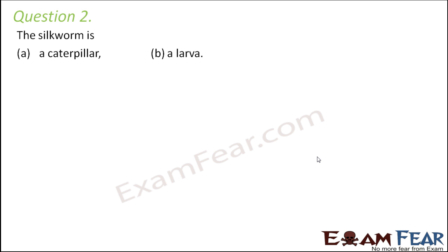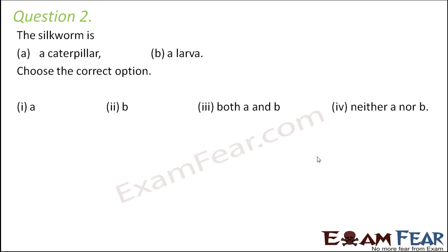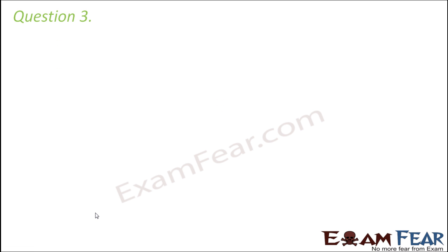Question number two: the silkworm is — a caterpillar, a larva — choose the correct option. The silkworm is just a stage in the life cycle of a silk moth. It is a caterpillar because it looks like one, and it is also a larva because it is the larval stage. The correct answer is both — the silkworm is a caterpillar and it is hatched from eggs as the larval stage.